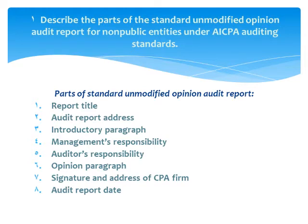Number 6 is the Opinion Paragraph — the most important section — because it states the auditor's conclusion based on the results of the audit. Number 7 is the Signature and Address of the CPA firm. The auditor should mention the name of the CPA firm or the partner who performed the audit, and the city and state of the CPA firm.